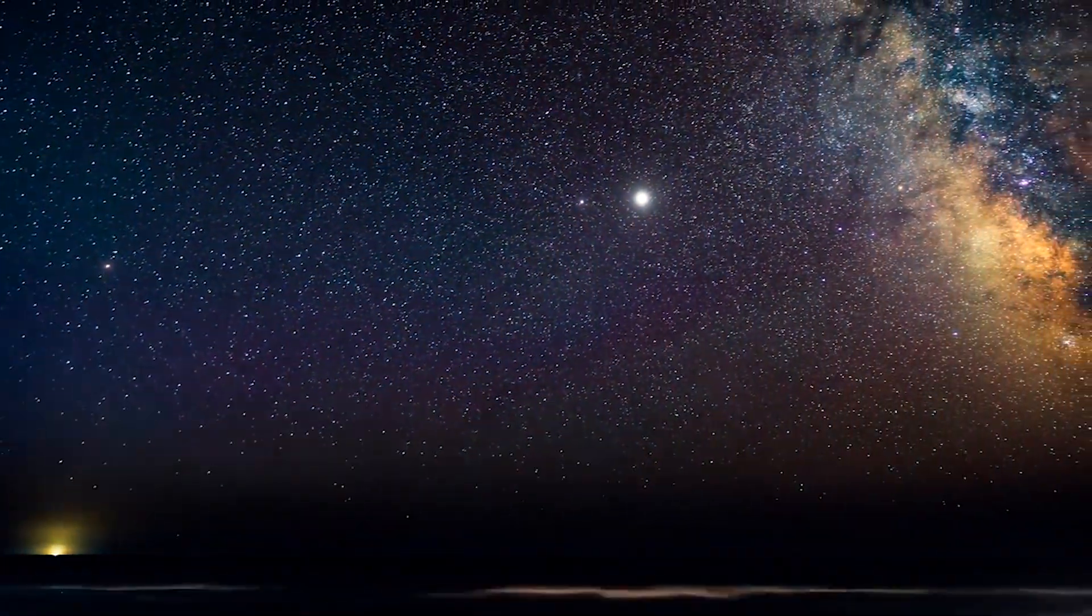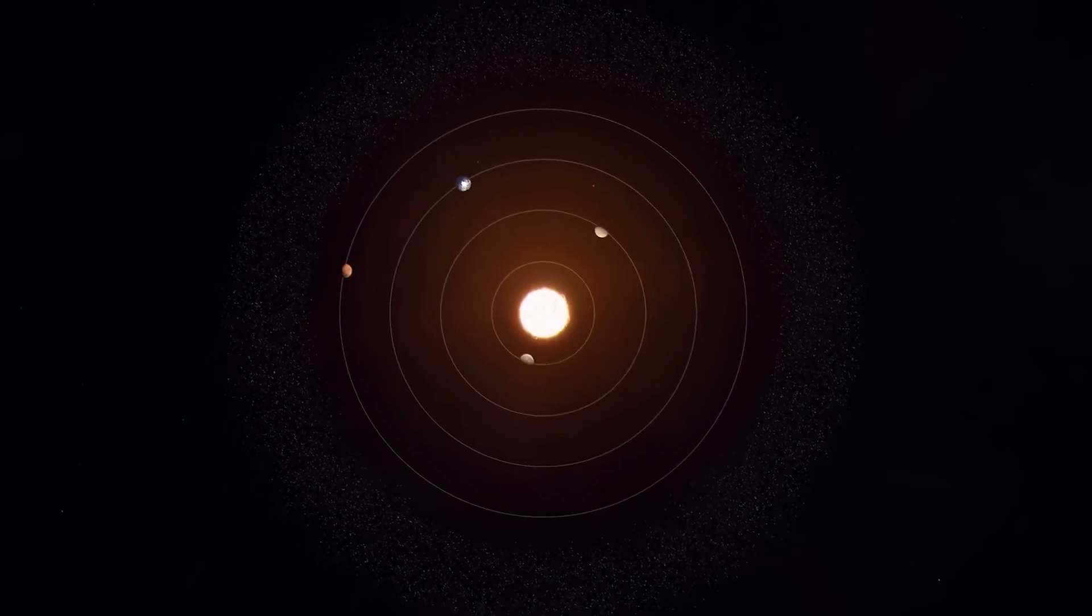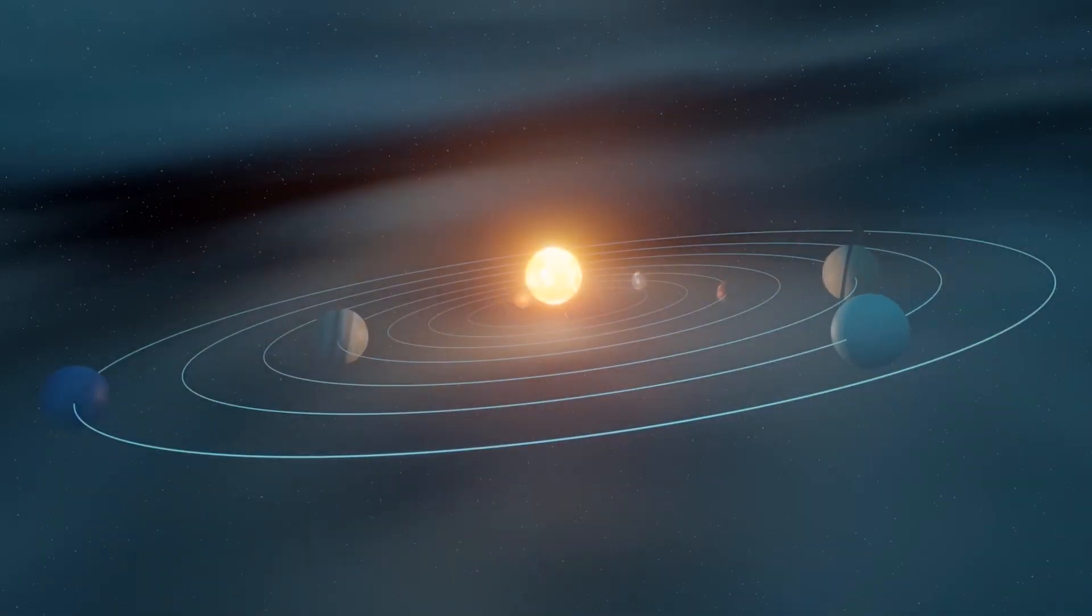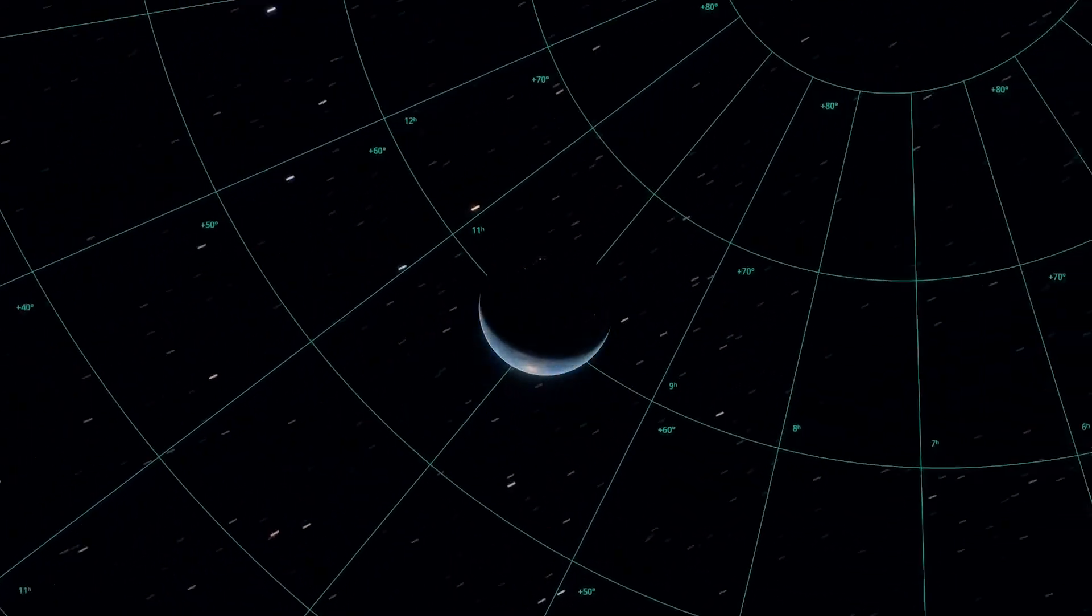Look up at the night sky and picture the familiar planets orbiting our Sun on a neat flat disk. Now tilt your gaze straight up, perpendicular to that disk, into territory maps rarely bother to draw.